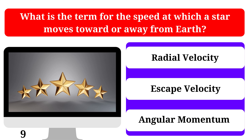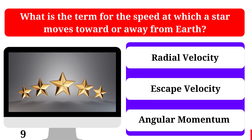What is the term for the speed at which a star moves toward or away from Earth? Radial Velocity, Escape Velocity, or Angular Momentum. The correct answer is Radial Velocity.